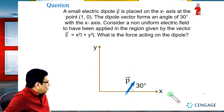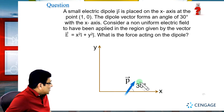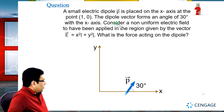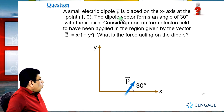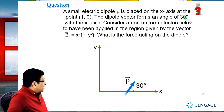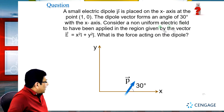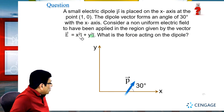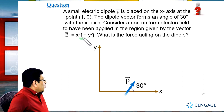You can observe in this diagram this dipole, having dipole moment p vector, is placed at coordinate (1, 0). The dipole vector forms an angle of 30 degrees with the x-axis. Consider a non-uniform electric field applied in the region given by E vector equal to x² î + y² ĵ. What is the force acting on the dipole?